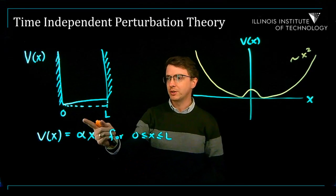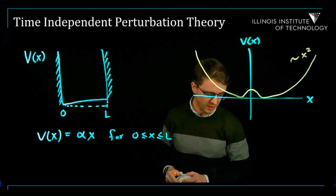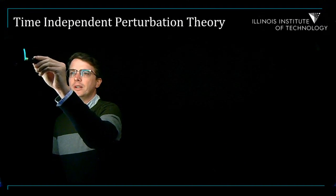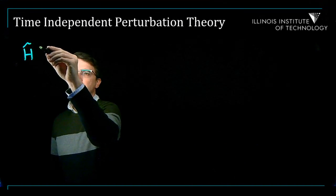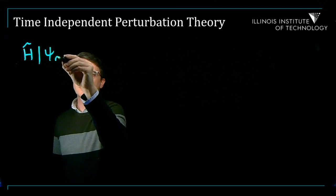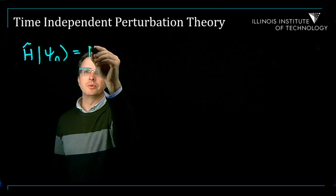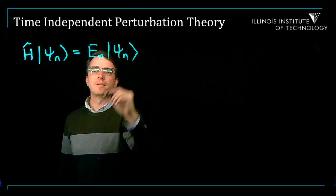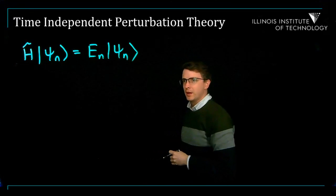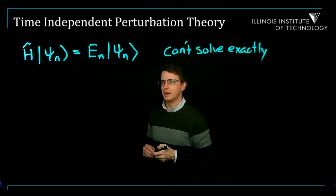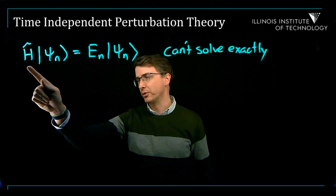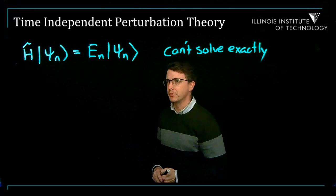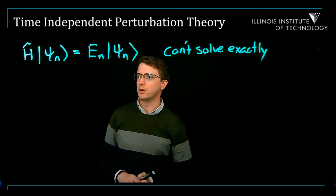We're going to learn ways to approximate the solutions for these kinds of problems. The idea goes like this: you're trying to solve the time-independent Schrodinger equation, H-hat psi-n equals E-n psi-n, for some Hamiltonian that you can't solve exactly. Imagine the Hamiltonian is not one of those special ones we've solved exactly — it's some more realistic problem that you need to approximate.